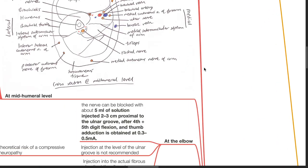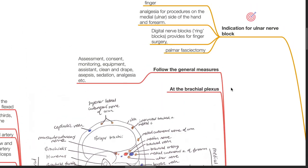Ulnar nerve blockade can be done at the level of the brachial plexus. Follow the general measures of nerve blockade in the brachial plexus block videos.